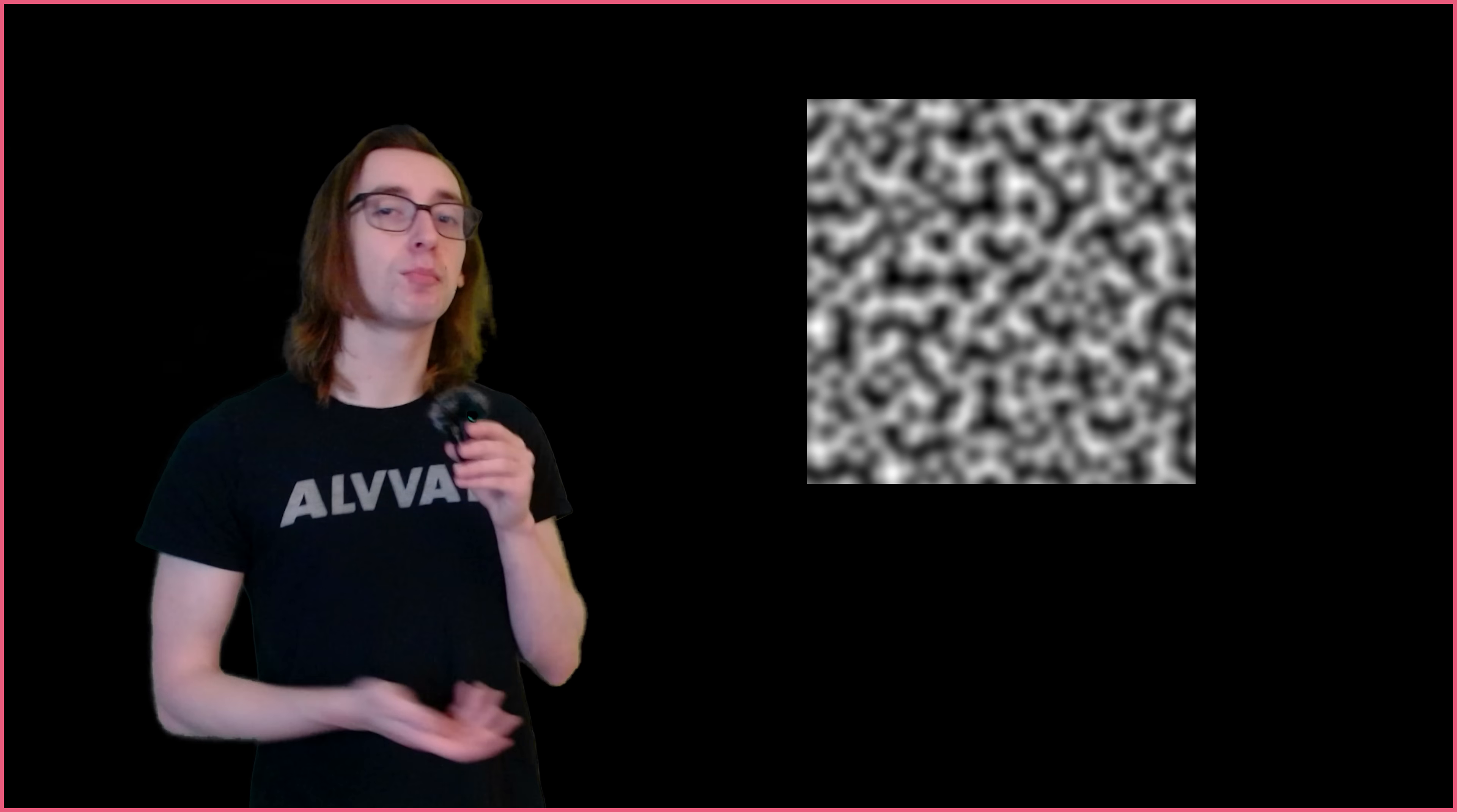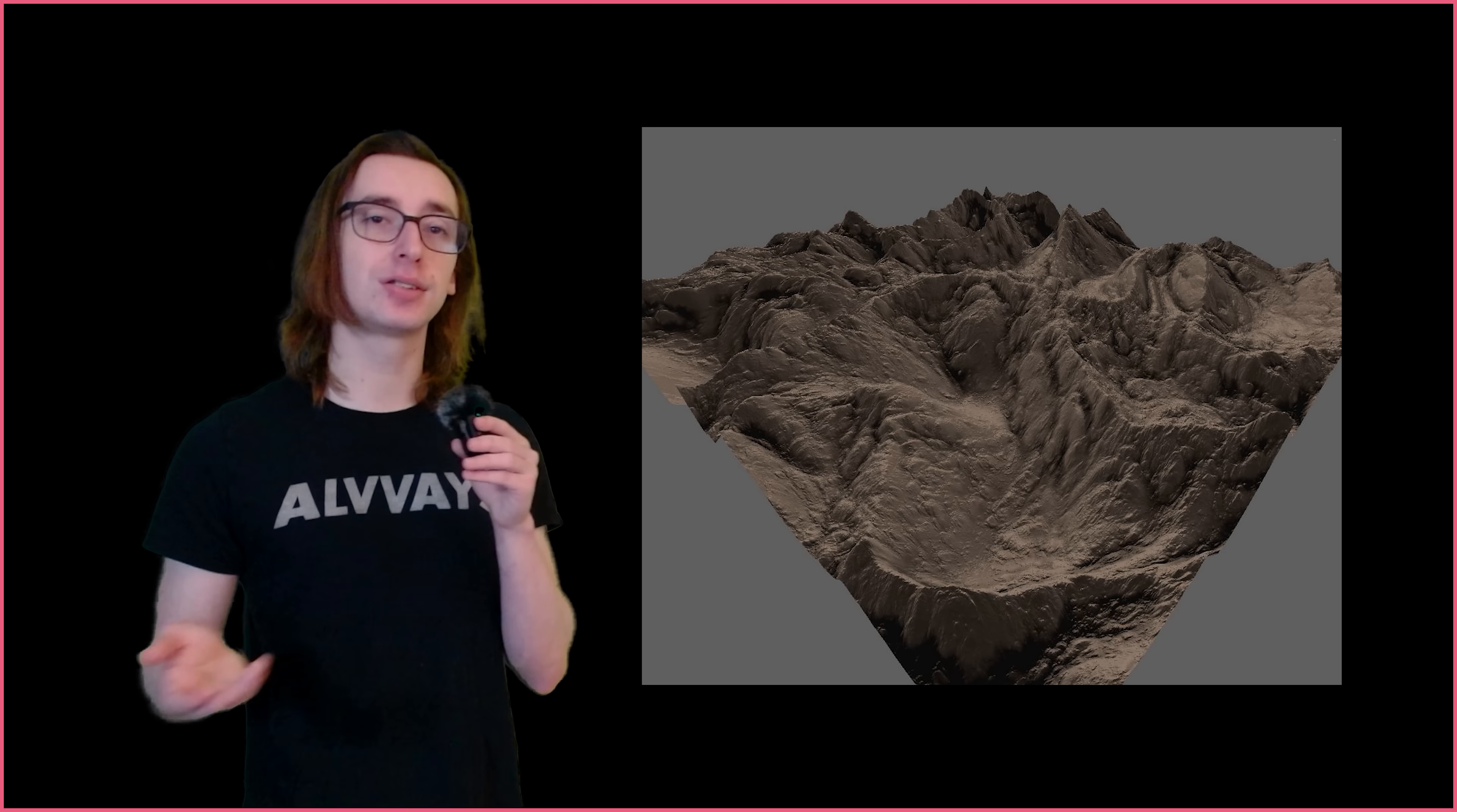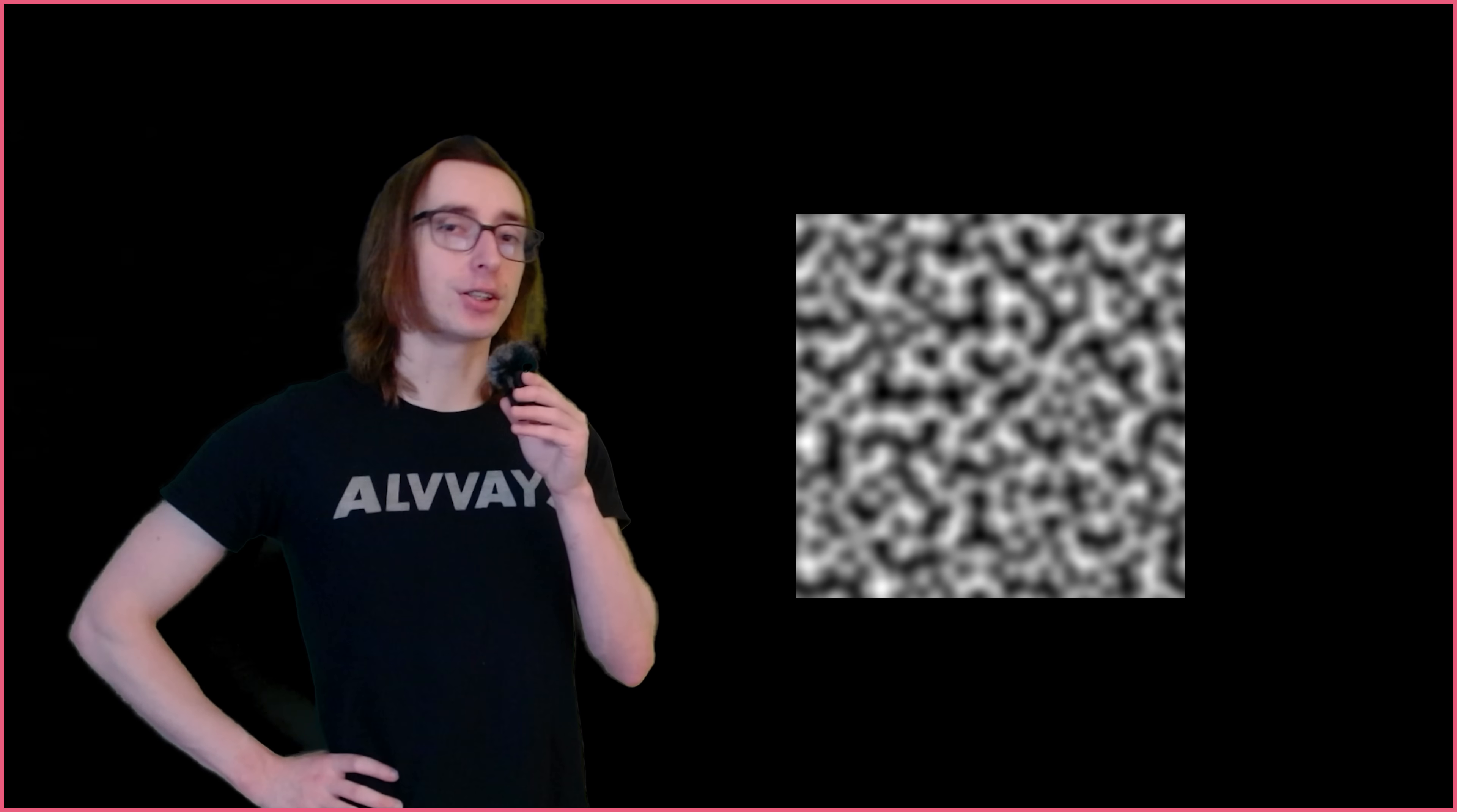While still random, Perlin noise produces a much smoother and organic-looking signal than raw white noise that is more than capable of producing convincing, natural-looking structures to model stuff like mountains, sand dunes, clouds, or whatever else. So how does Perlin noise work?